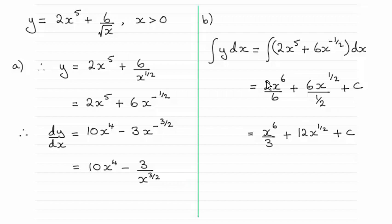Clean up, the 2 will cancel into the 6, giving me a 3. So you've got x to the 6 over 3. For this one, 6 divided by a half is 12. And then we've got 12x to the half plus that constant of integration. All right?